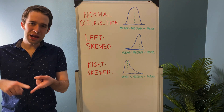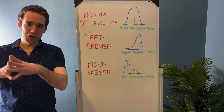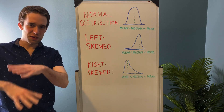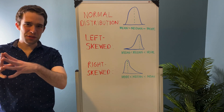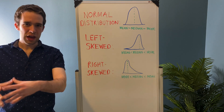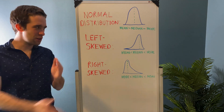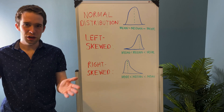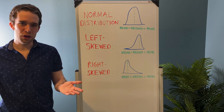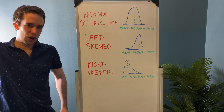That covers it for mean, median, and mode. Now you know how these things are calculated, the stipulations around them, how they can be used to deceive people, and how they manifest in distributions of data. Thanks for watching this video. Until next time, Richard on Data.